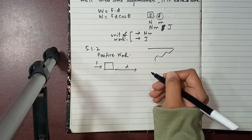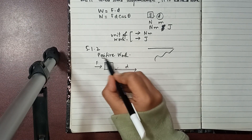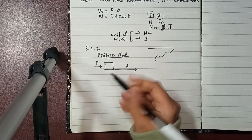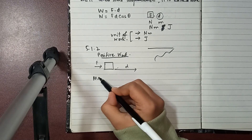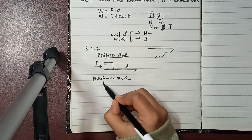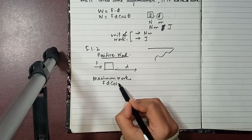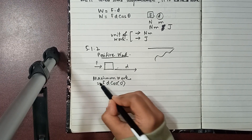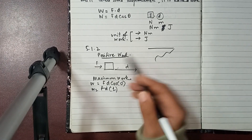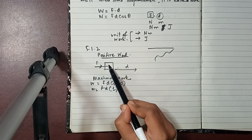When the angle is zero degrees, that means force and displacement are parallel, and the work will be maximum. In this case W = Fd × cos0° = Fd × 1, so work equals Fd — this is the maximum work.